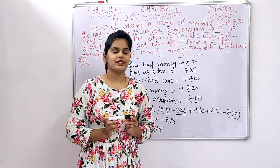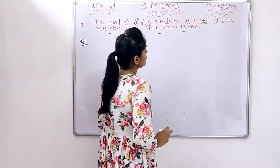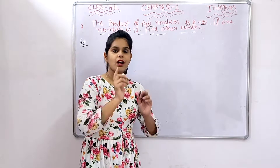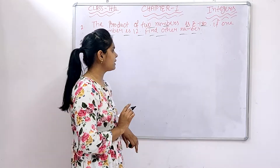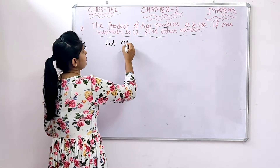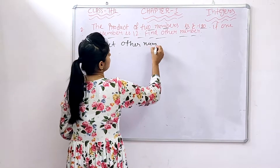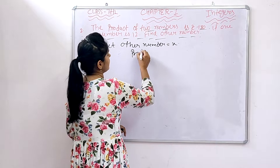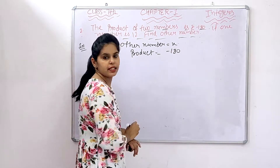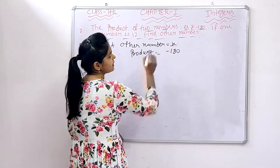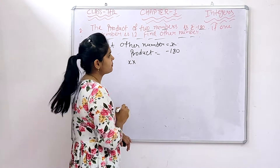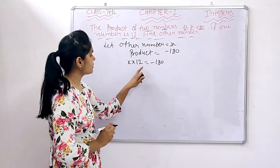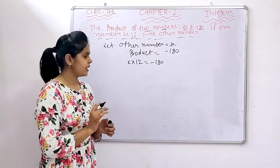Let's come to the next question. The product of two numbers is minus 180. If one number is 12, find the other number. We have the product given and one number is given, so we need to find the other number. Let the other number equal x. So x multiplied by 12 equals minus 180.